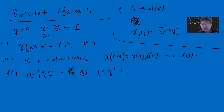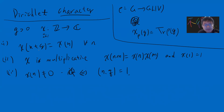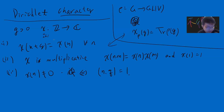Note that χ(1) = 1 is forced: since χ(1) = χ(1)², if χ(1) were zero then everything would be zero by multiplicativity, contradicting condition (3). So χ(1) = 1 is trivially required.